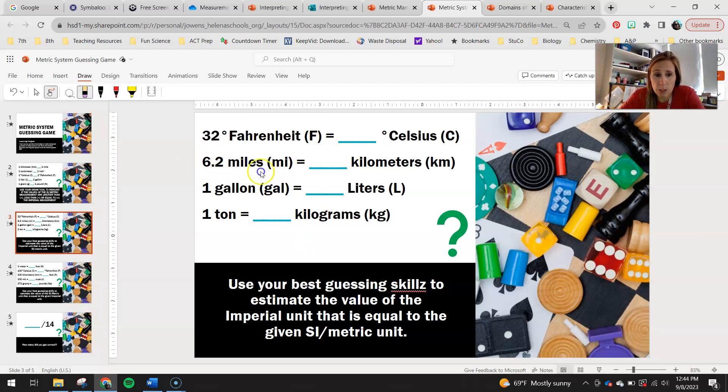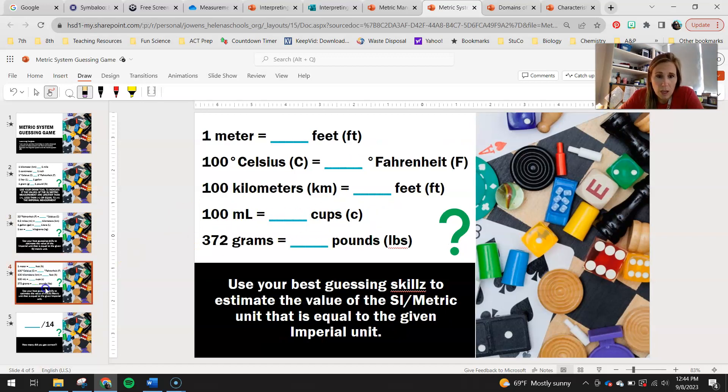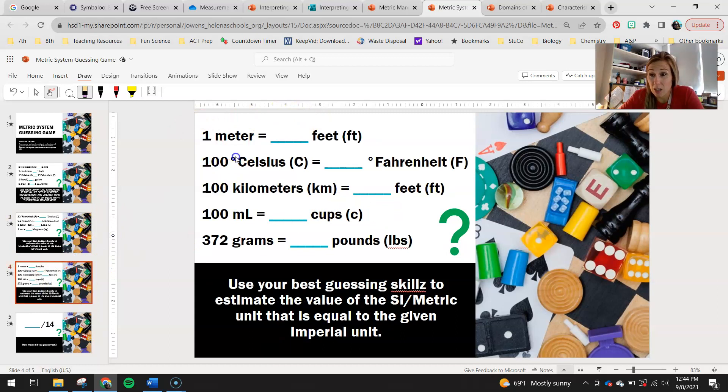6.2 miles, if you run 6.2 miles, how many kilometers is that? If you're in cross country or you like to run track or whatever, you might know that answer. One gallon is how many liters. A liter is very close to a quart. One ton is how many kilograms. Remember, a ton is about 2,000 pounds. So how many kilograms do you think is equal to 2,000 pounds? One meter, if you think of a meter stick, it's very close to a yardstick. So if anyone here plays football, you might know how many feet are in a yard as we use yards to calculate downs and stuff in football. 100 degrees Celsius. This is kind of similar to the first one we did, except it won't be water freezing. So think about what the significance of that number might be.